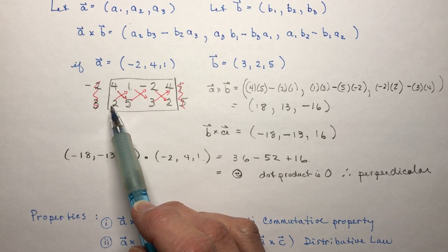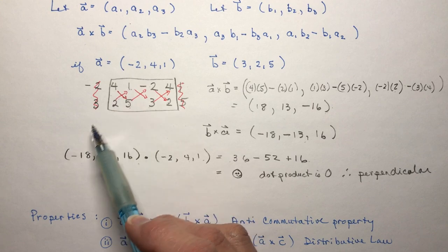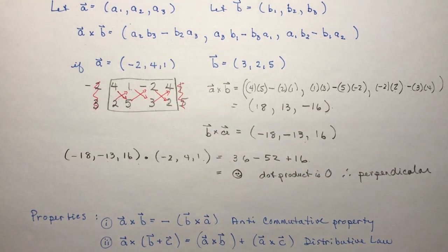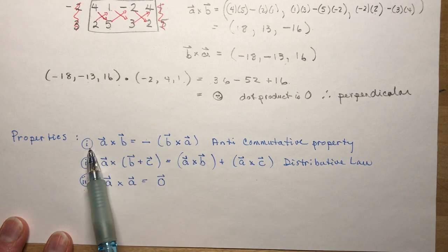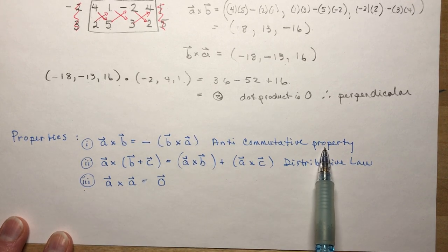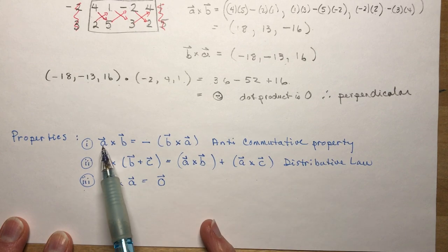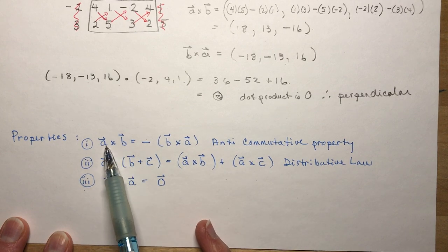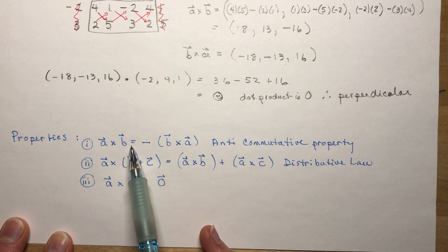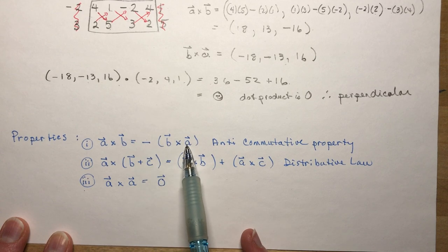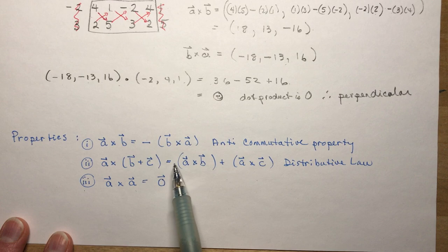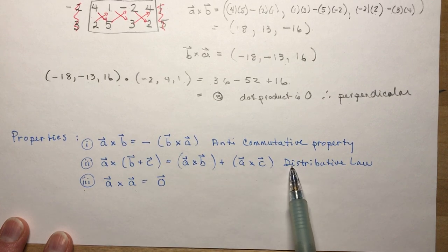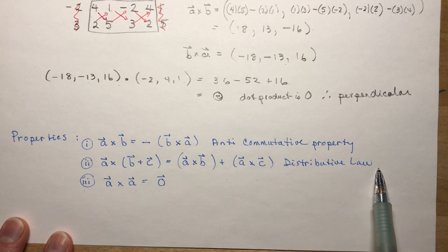So finally the properties we've already talked about this one the anti-commutative property something you've never seen before that when you multiply two things together the cross product here in this case is the negative of the other one and a cross with b plus c is a cross b plus a cross c that's nice the distributive law applies.